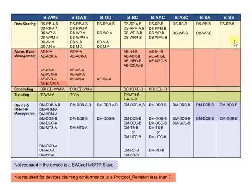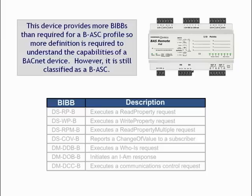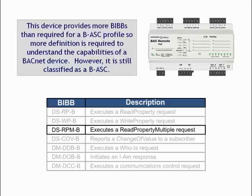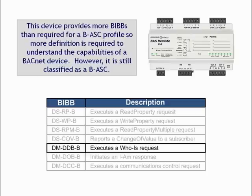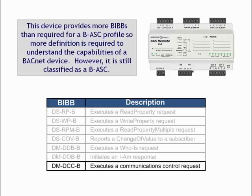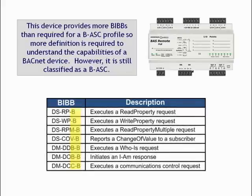Adding BIBs beyond the minimum does not jeopardize the classification. We will do an example of an Application-Specific Controller, tagged B-ASC. This device supports seven BIBs: read property, write property, read property multiple, change of value, executes a who-is request, initiates an I-am response, and executes a communications control request. Notice all these BIBs are B services, which means the device is responding to a request, and therefore is a server and not a client.